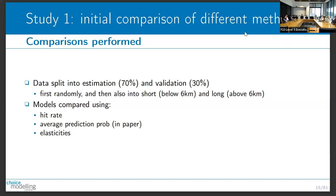Choice modelers very rarely do model validation, and when we do, we tend to just split data into estimation and validation portions. Machine learning is much better at this. We're doing two different ways: first splitting the data 70%/30% as a random split, and then also splitting by short and long trips. We're using hit rates - the traditional approach from machine learning - to compare models, and also looking at average prediction probabilities and elasticities.